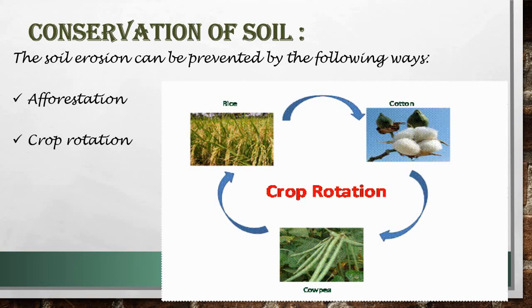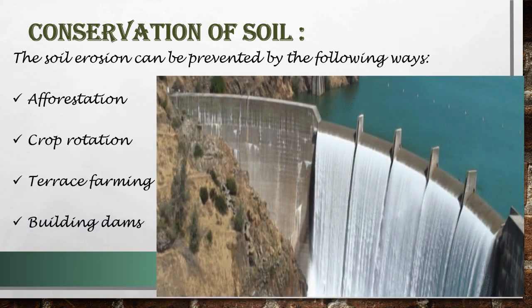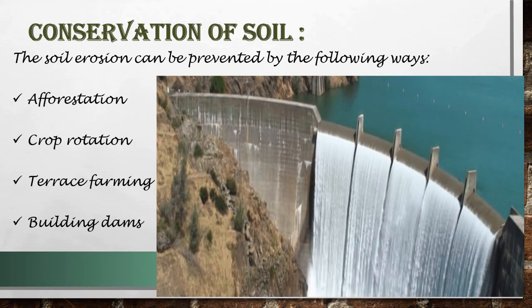The next method is terrace farming. In hilly areas, farming is done by cutting steps on the slopes of hills. This slows down the flow of water, and soil removed from one step is deposited on the next step, so the soil is never completely lost. This is known as terrace farming. The last method is building dams. Dams are built to prevent floods, which not only damage crops but also wash away the topsoil. By building dams, we can also conserve our soil.